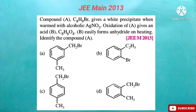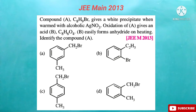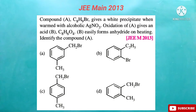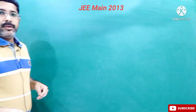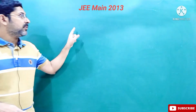You see the question on the screen. The compound A, that is C8H9Br, gives a white precipitate when warmed with alcoholic silver nitrate, and on oxidation of A gives an acid B that is C8H6O4, and B easily forms an anhydride on heating. We have to identify the compound A.